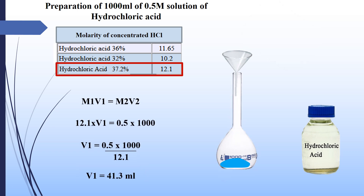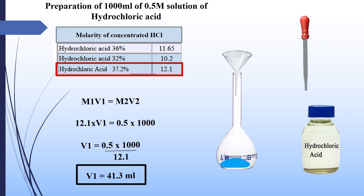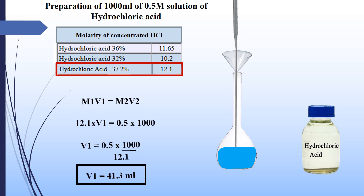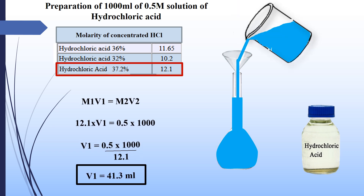To prepare 1000 milliliters of 0.5 molar solution of hydrochloric acid: M1 will be the same as in the previous calculations. V1 is to be found out. M2 will be 0.5, as we want to prepare a 0.5 molar solution. Put 1000 in V2, as we want to prepare 1000 milliliters of solution. Take 41.3 milliliters of concentrated hydrochloric acid with a pipette into a 1000 ml flask having a little water in it, and dilute the solution up to the mark. This will be 1000 milliliters of 0.5 molar solution of hydrochloric acid.